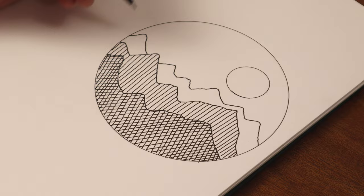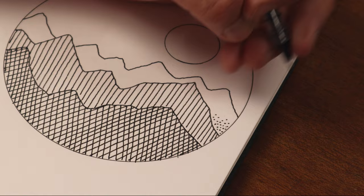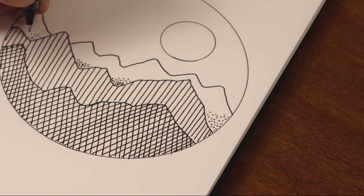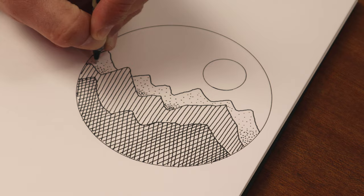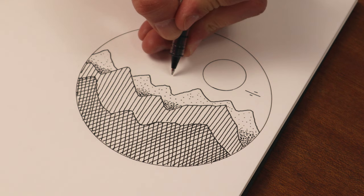And for the distant mountains, I will use some dots. This is called stippling. Then stick a few lines in for some distant clouds and you're done. Right, onto the next one.